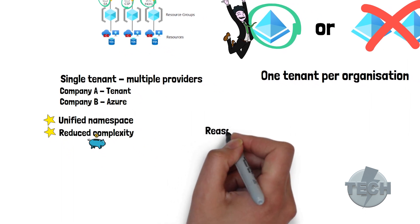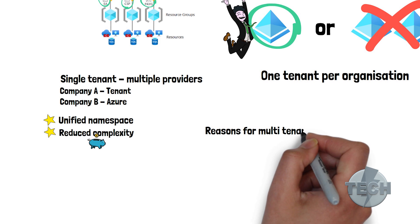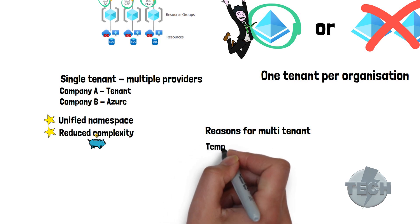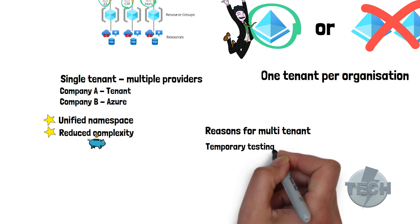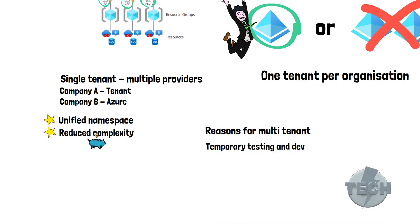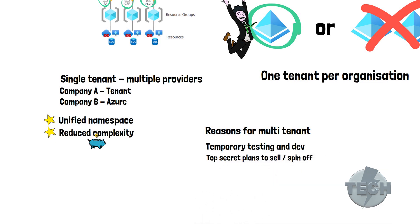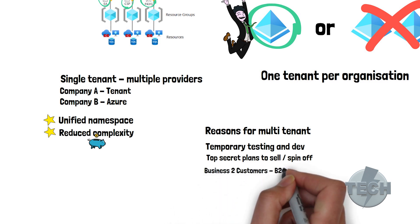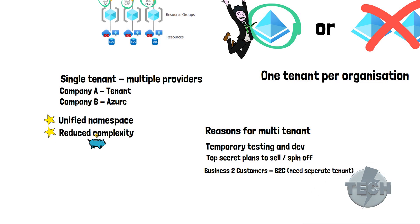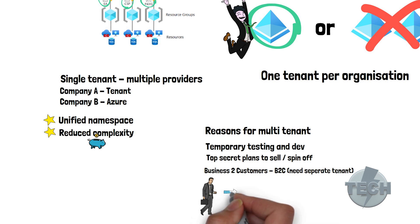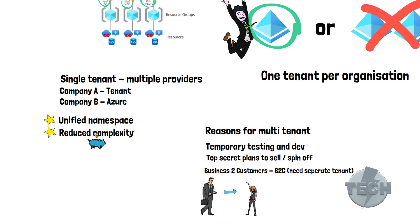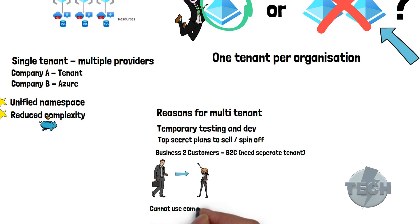Let's think about some reasons to go for a multi-tenant solution. Create an extra tenant if you want to temporarily do some testing or development at that level. There might be plans in the future to separate or spin off from the original company. If you're going to make use of Azure AD B2C, then you require a separate tenant. B2C is business-to-customer — that means your customers can use their own social media accounts to get access to your application and authenticate your APIs. Also, there are scenarios where you cannot use your company name as brand identity for your applications.